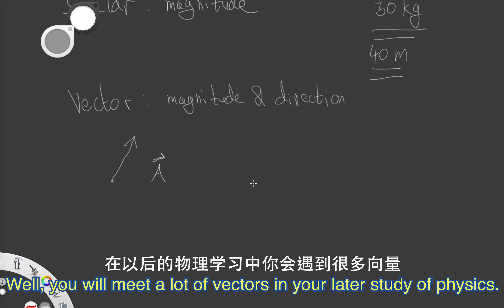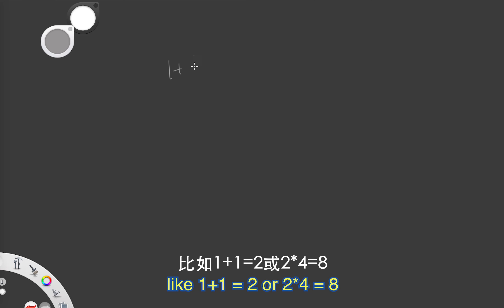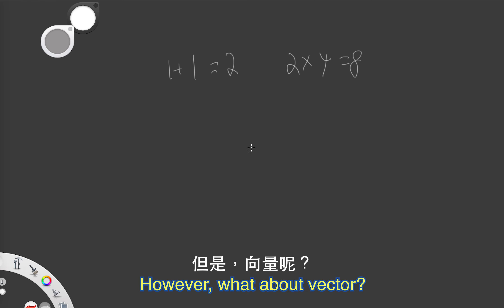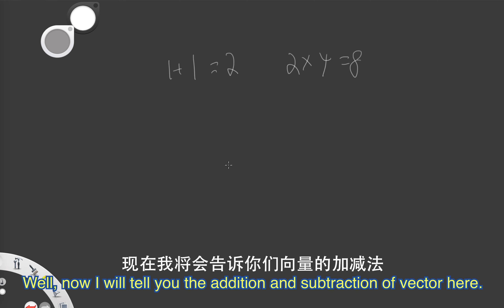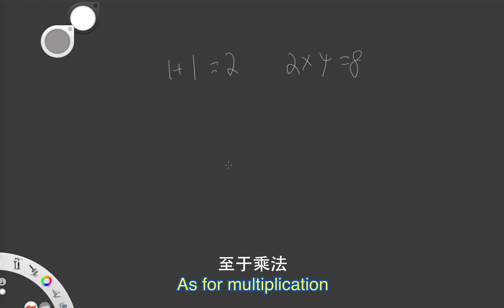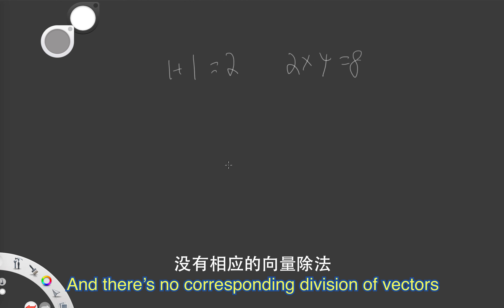You will meet a lot of vectors in your later study of physics. Now, you must be very familiar with the calculation of scalars, like 1 plus 1 equals 2, or 2 times 4 equals 8. However, what about vectors? Do you understand vector addition, subtraction, or multiplication? I will tell you the addition and subtraction of vectors here. As for multiplication, you don't need to master it right now, and there is no corresponding division of vectors.